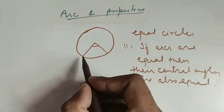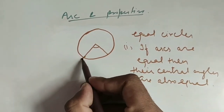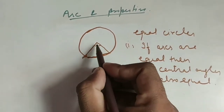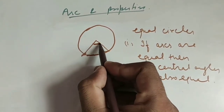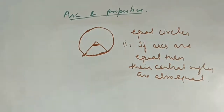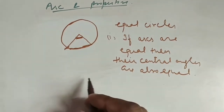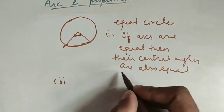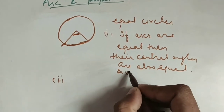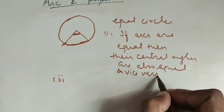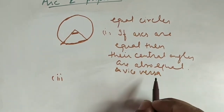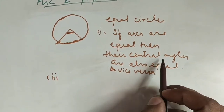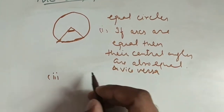What are central angles? Suppose this is the arc we are considering — this angle is the central angle. If arcs are equal, then their central angles are equal, and vice versa: if arcs are equal then central angles are equal, and if central angles are equal then arcs are equal.